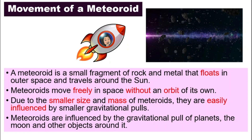Because meteoroids are smaller in their size and also their mass, they are very easily influenced by outer pull — for example, the gravitational pulls of the planets around them, the moon, and all the objects that they are near to. So because they are smaller, they are very easily influenced.